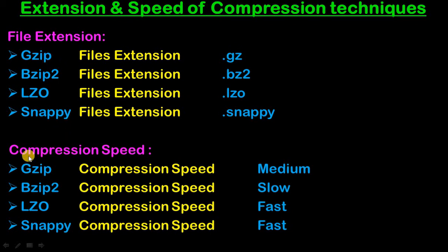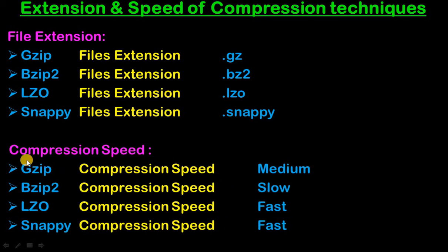Now let's see compression speed. Gzip compression speed is medium. Bzip2 compression speed is slow. LZO compression speed is fast. And Snappy compression speed is fast. So LZO and Snappy compress data very quickly, while Bzip2 compresses data at a very slow speed.